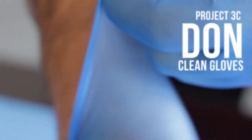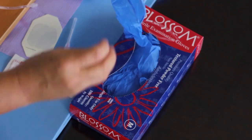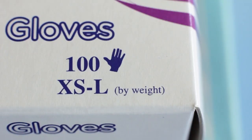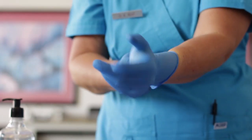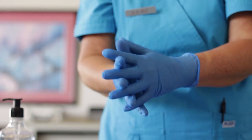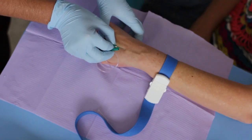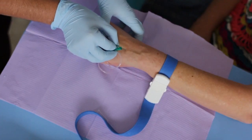Project 3C – How to Don Clean Gloves. Surgically clean gloves usually come packed in a box of 100 gloves. These are designed to fit comfortably on either the left or the right hand. They primarily serve as a barrier between the healthcare worker and the patient.